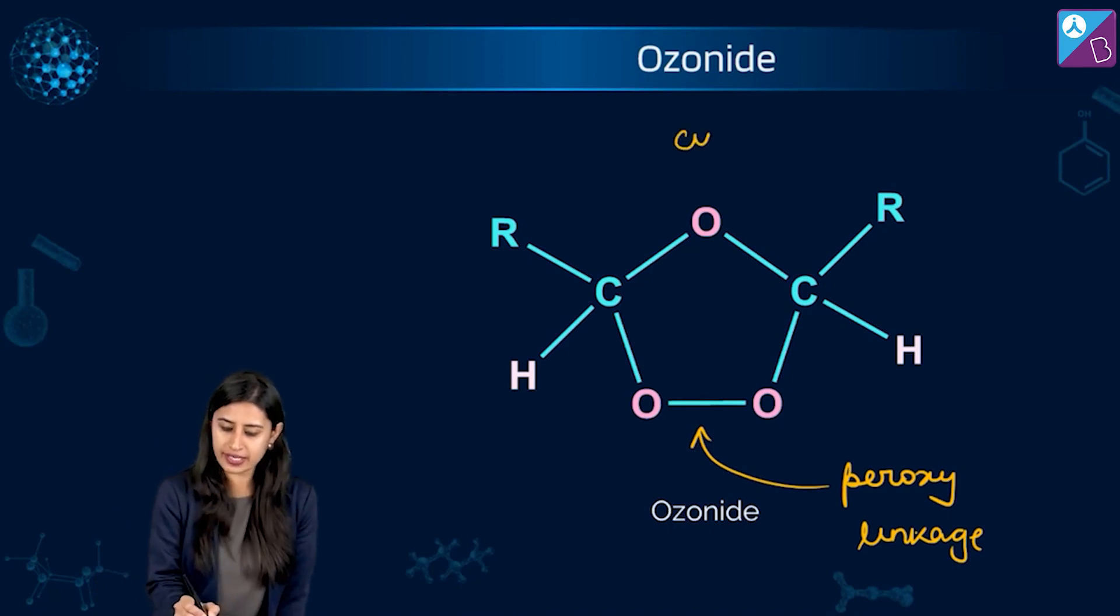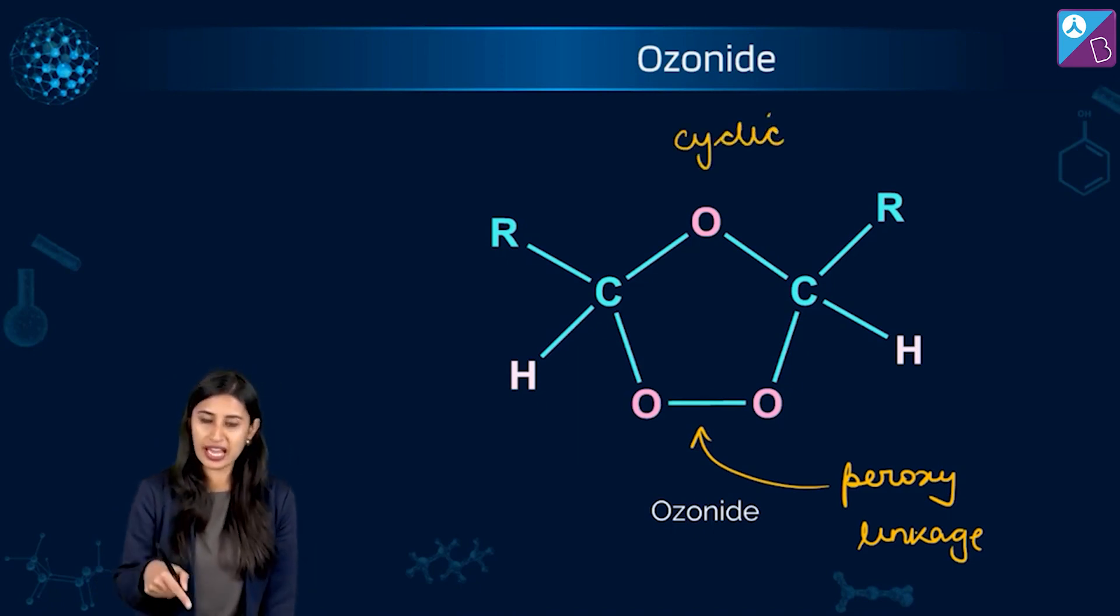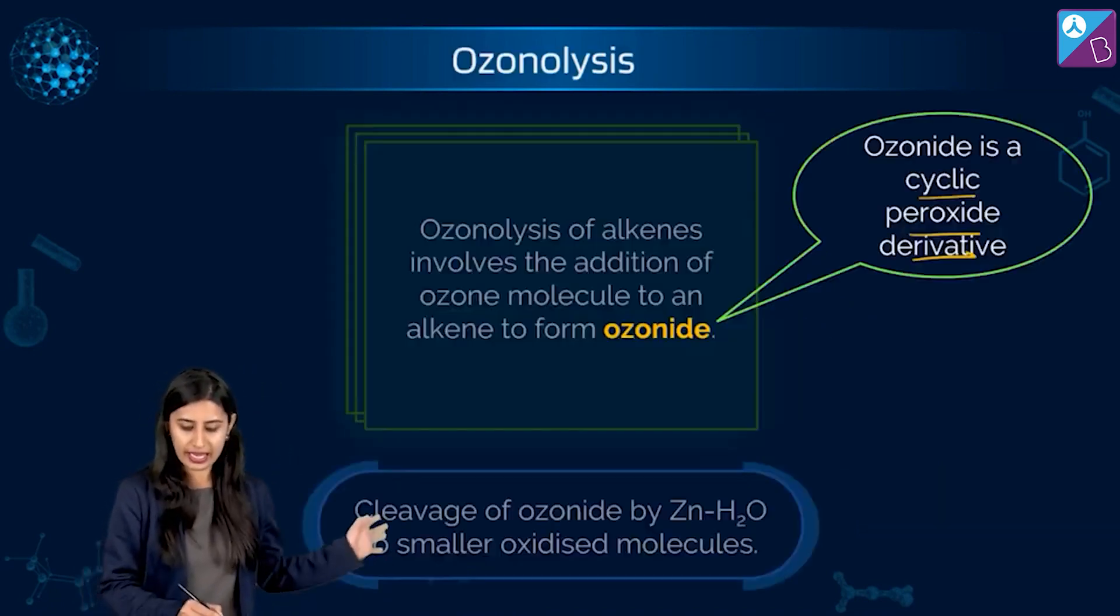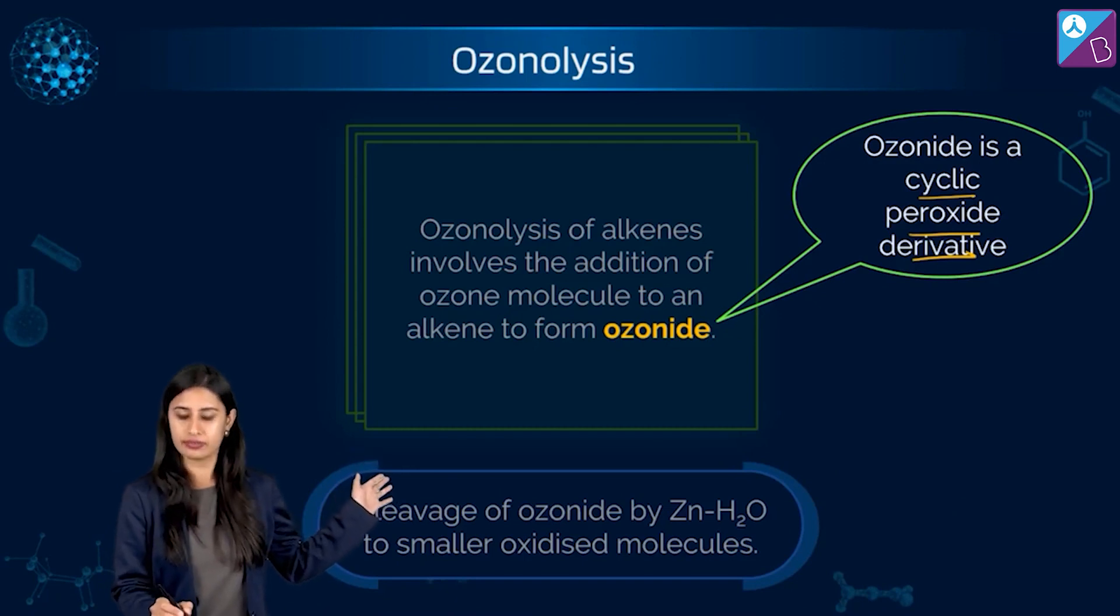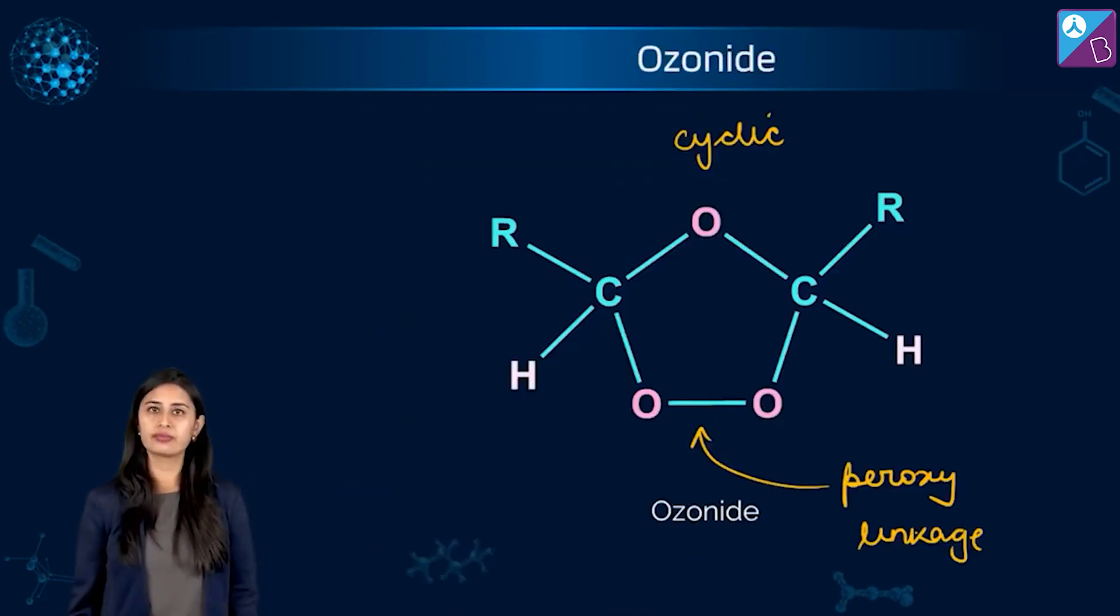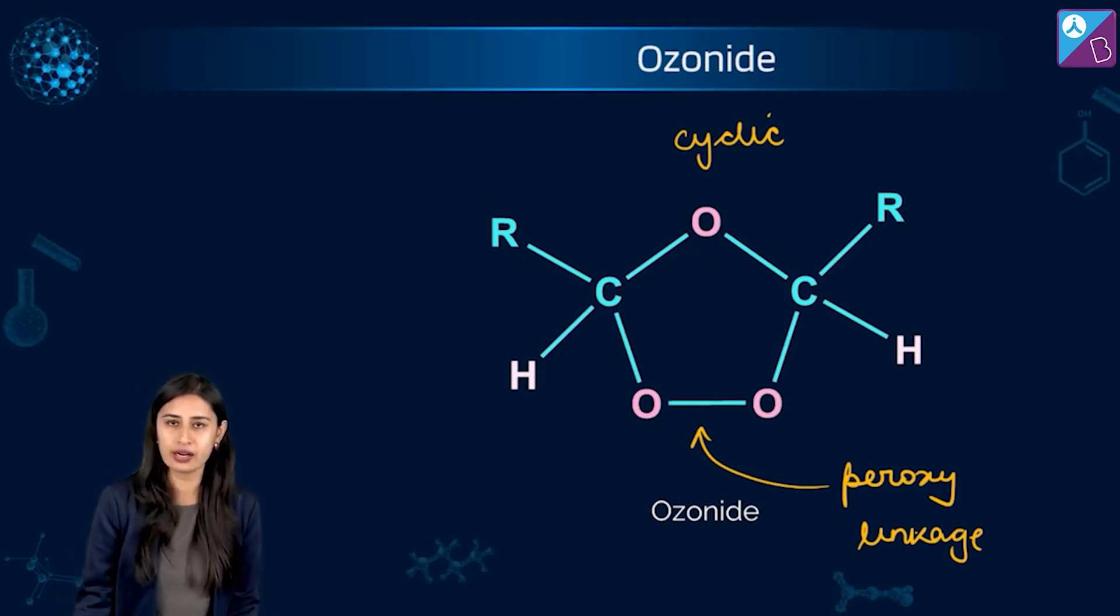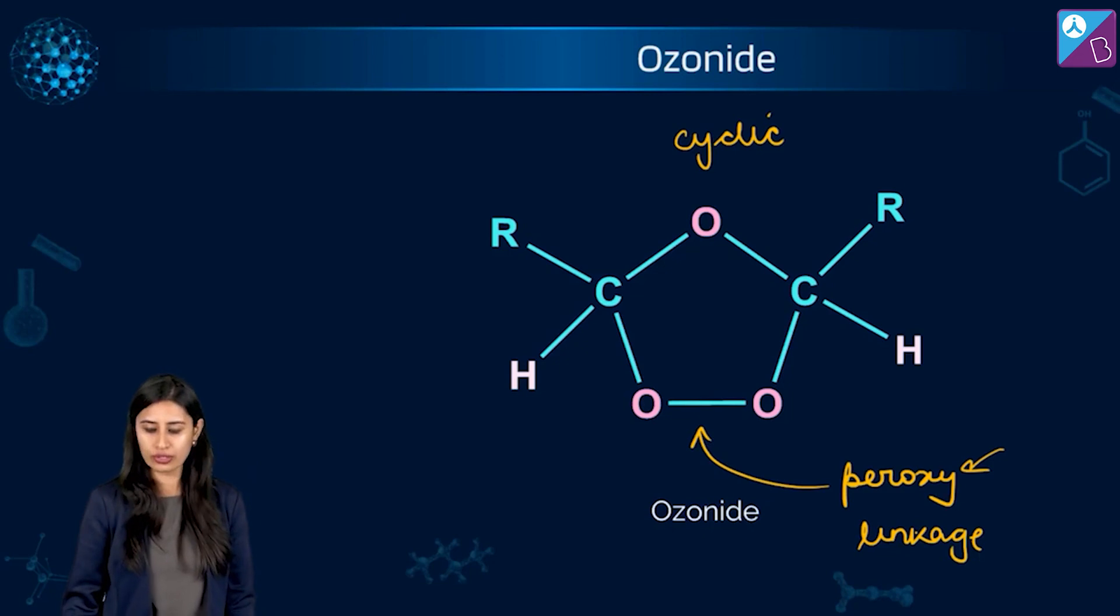So what is it? It's cyclic. Is it not cyclic? Yes, it is. So it's a cyclic peroxide derivative. Don't you agree? It's cyclic. You can see a peroxy linkage present. So it's a cyclic peroxide derivative. Ozonide.